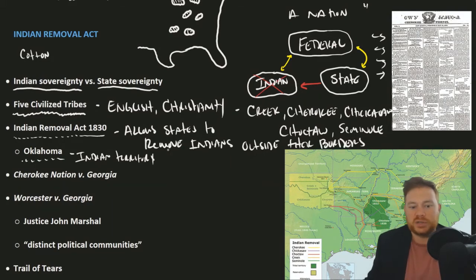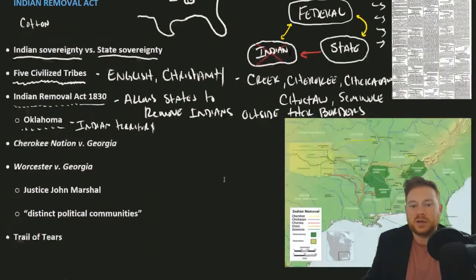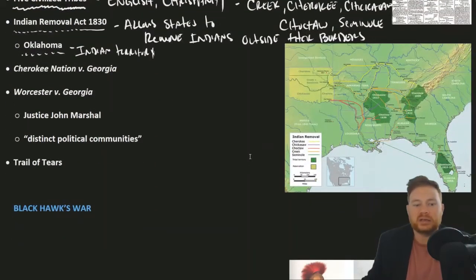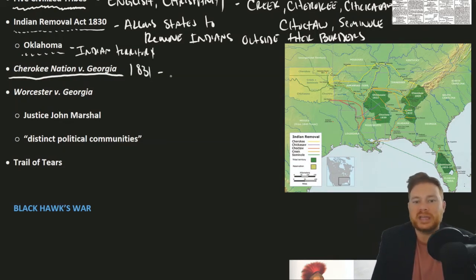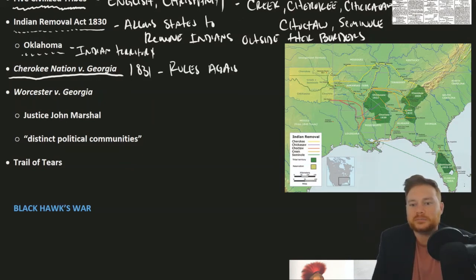Tribes like the Cherokee fought back and sued in a Supreme Court case — Cherokee versus the state of Georgia in 1831. The Cherokees sued to keep their land, but in this case the Supreme Court ruled against the Cherokee.